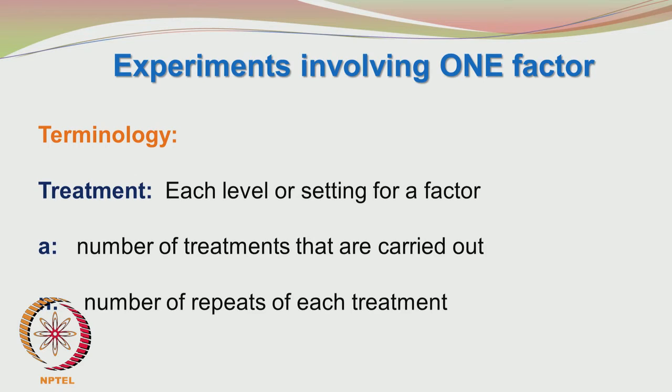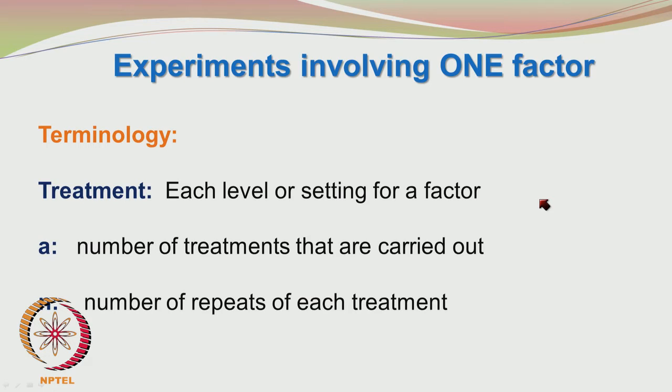Now we look at another important term: treatment. It is a somewhat unusual term in experiments, but it is very simple. Treatment is each level or setting for a factor — the value taken by a factor when it is kept at a certain level. We can have A treatments; for our reactor example there may be A temperatures.